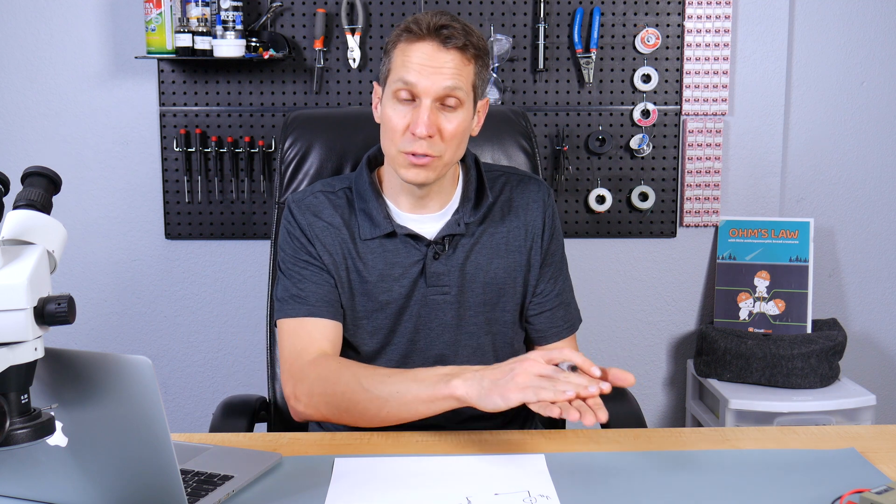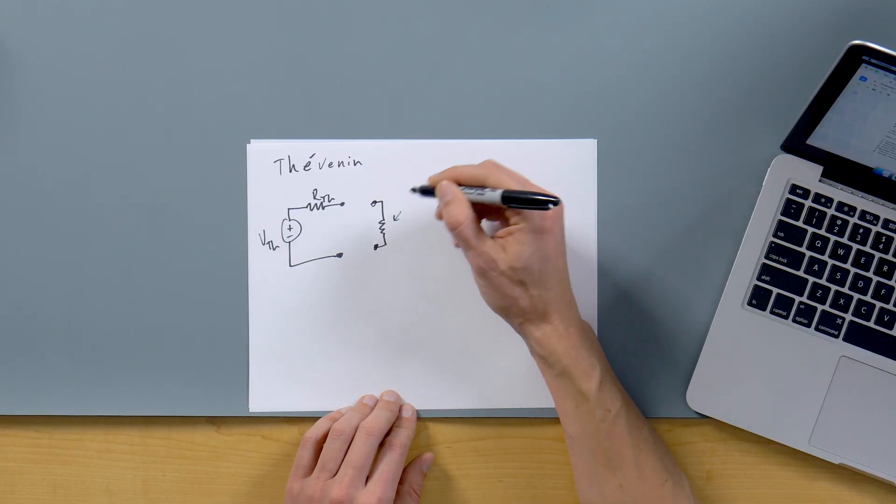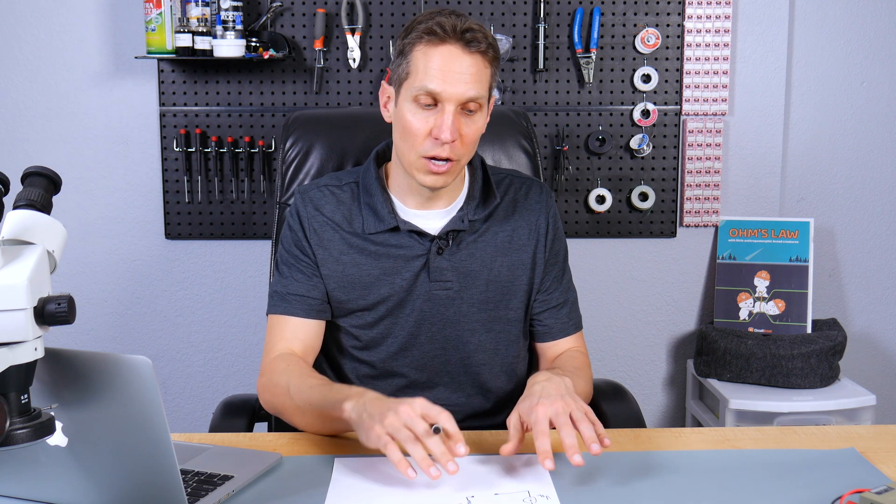So all of these steps are basically so you can find your Thevenin resistance and your Thevenin voltage. And the way you find your Thevenin resistance is you basically just turn all of your voltage sources into shorts and all of your current sources into opens. And then from the viewpoint of your load, see what the resistance is going into that. And then on your Thevenin voltage, you basically just take out your load, and then you find out what your voltage is across that spot where your load was. All right, so now that that was incredibly confusing, let's go through the individual steps, and then we'll apply them and then everything will start to make a lot of sense.